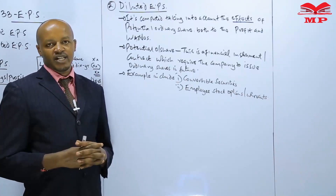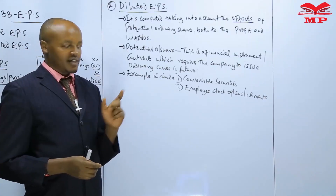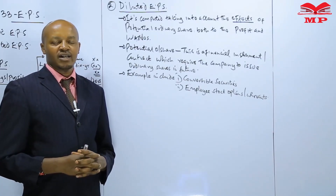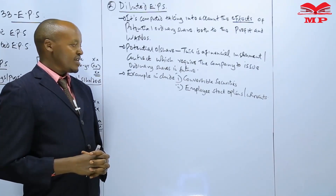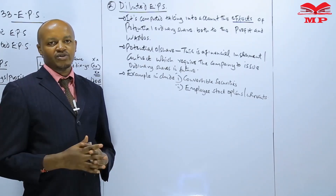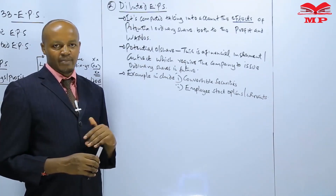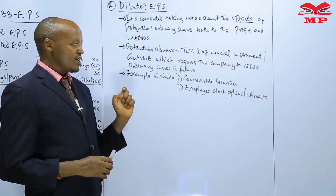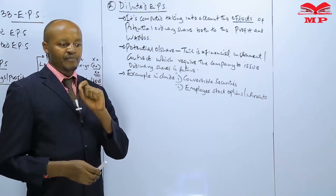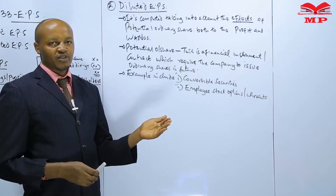Employee stock options or warrants are the rights given to the employees of the company to buy shares of the company in future at a price which is below the market price. It is important to note that employee stock options or warrants will only be considered as potential ordinary shares if the employees have not exercised their option as at the end of the year.